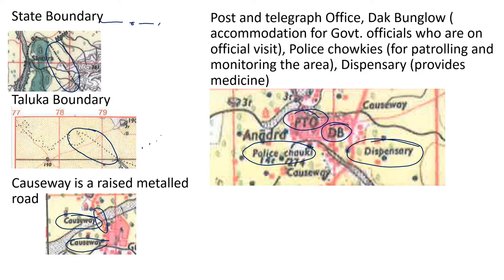So we have learned a few symbols: PTO for post and telegraph office, DB for dak bungalow, dispensary — a small hospital where they provide medicine — and police chowki.